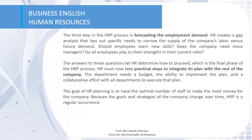The last step is to put everything into practice aligned with the rest of the company, requiring alignment with all departments and sectors. The HR department needs a budget, the ability to implement the plan, and a collaborative effort with all departments. The main goal of HR planning is to have the optimal number of staff to create the most value for the company — and as company goals and strategies change over time, HR planning changes too.